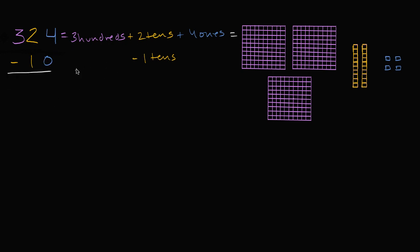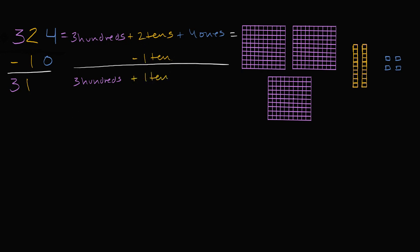So what is that going to get me? Well, my hundreds don't change — I'm not subtracting any hundreds, so I still have three hundreds. I had two tens and I'm taking one of them away, so now I have two minus one, which is one ten. I take away one ten and now I'm going to have plus one ten. And I had four ones and I'm not taking any ones away, so I still have four ones — four ones minus zero ones is four ones.